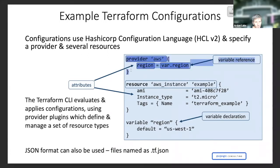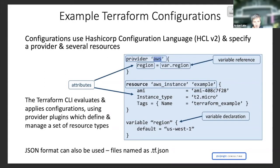So a provider section telling us what provider we're going to use. Here we're going to create AWS resources. The Terraform init will use this to download the AWS provider plugin. We can also tell it what region we're going to be working in — Terraform has to know what region to create the resources in.